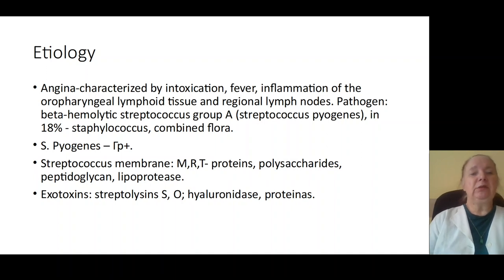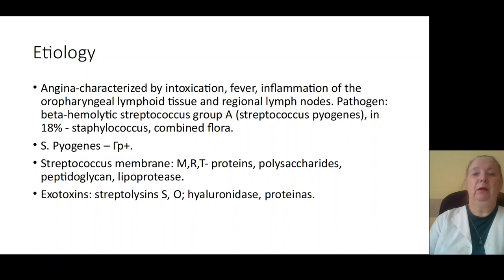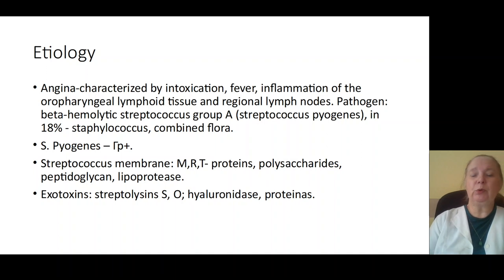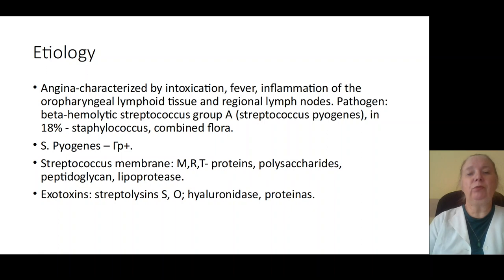Exotoxin causes increasing of permeability of blood vessels, causes depression of immune response, and causes inflammation or alteration of lymphoid tissue.